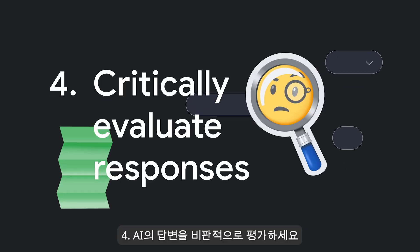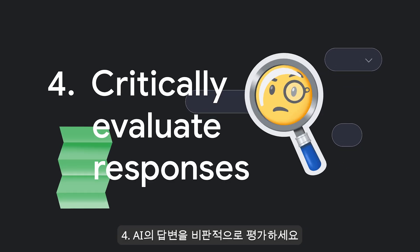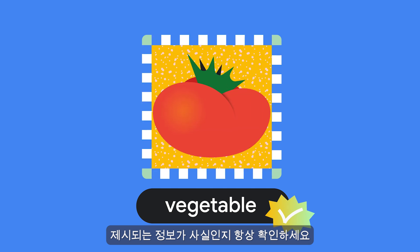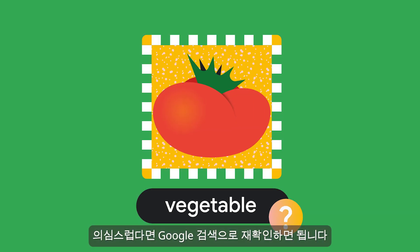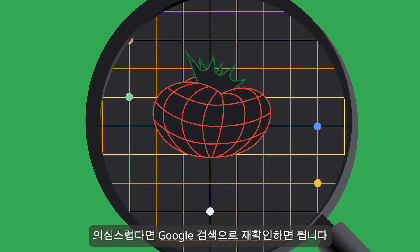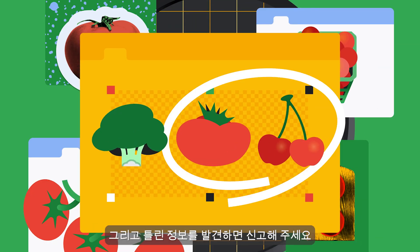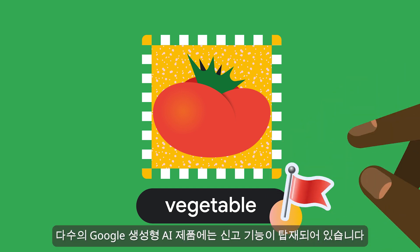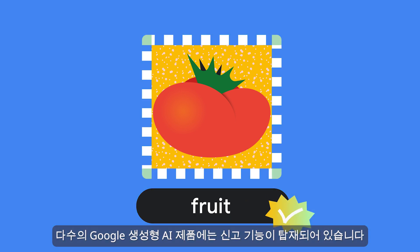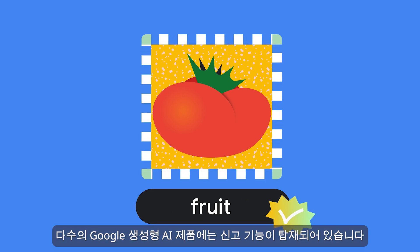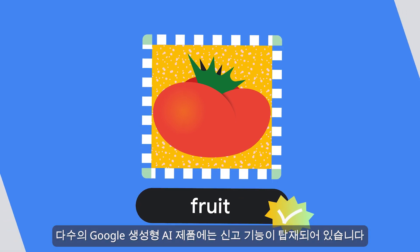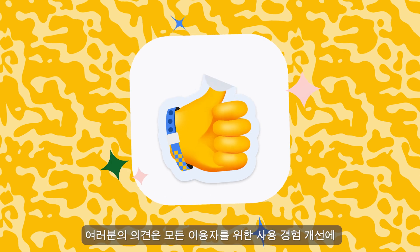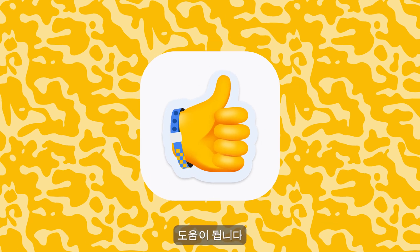Critically evaluate responses. Always check information that's presented as fact. When in doubt, double check it with Google Search. If you see something that's not right, flag it. Many of our Generative AI products have reporting tools, and your feedback helps improve the experience for everyone.